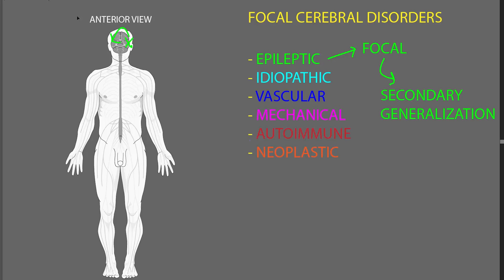So a focal seizure starts in one spot and then secondarily generalizes to most of the cerebral cortex. There are other types of seizures that kind of start all over most of the cortex all at once, called generalized seizures, and we'll mention those with the diffuse cerebral disorders.